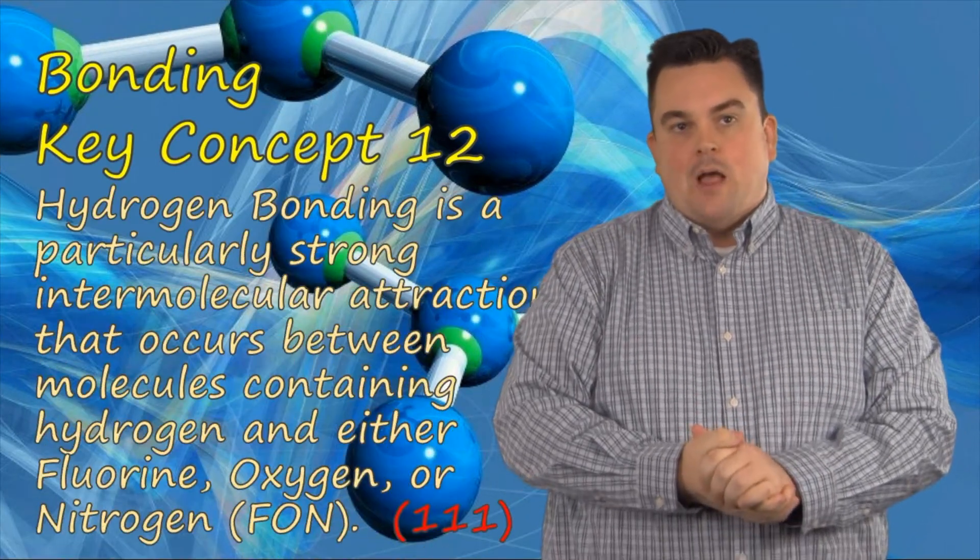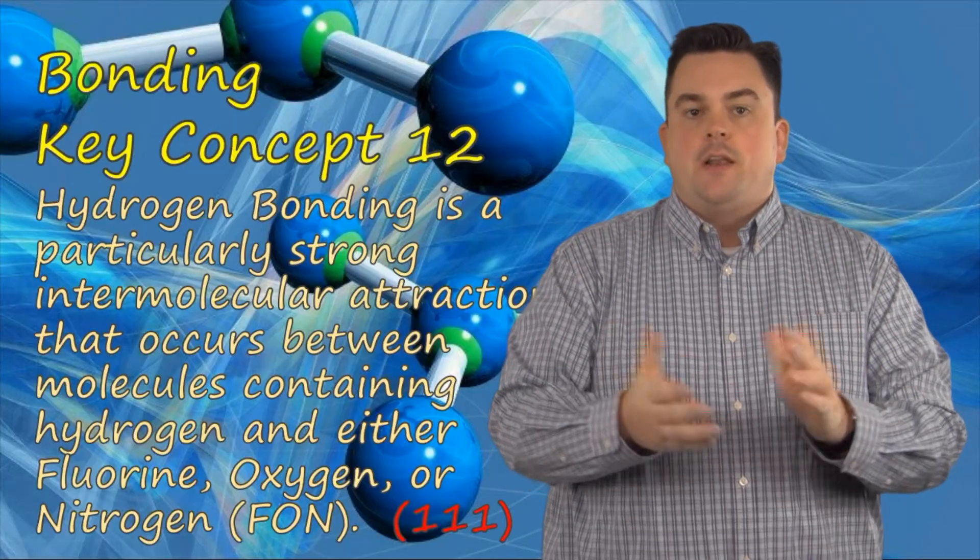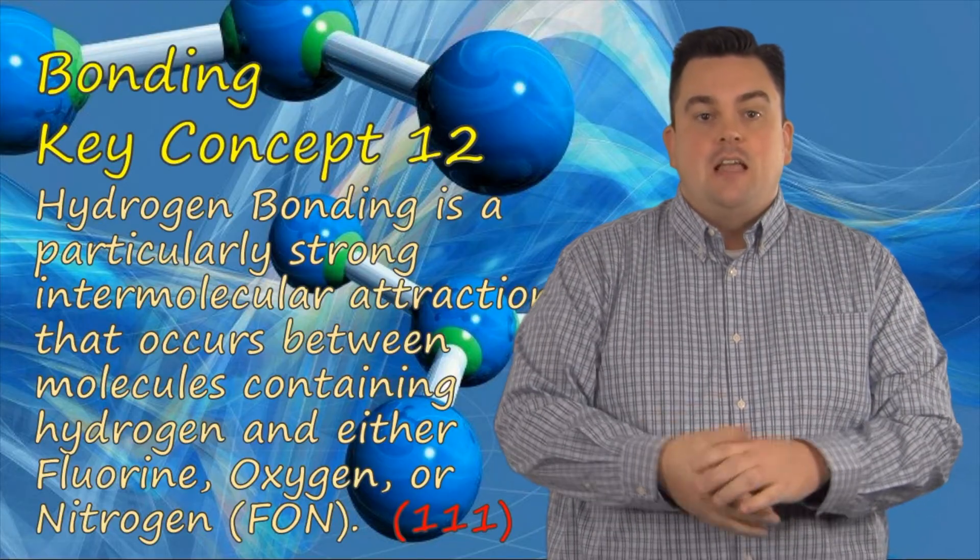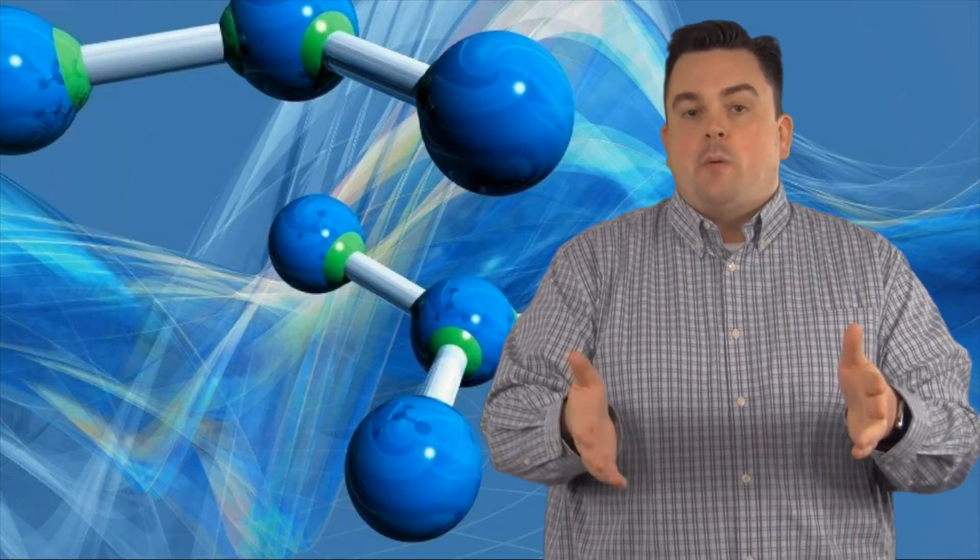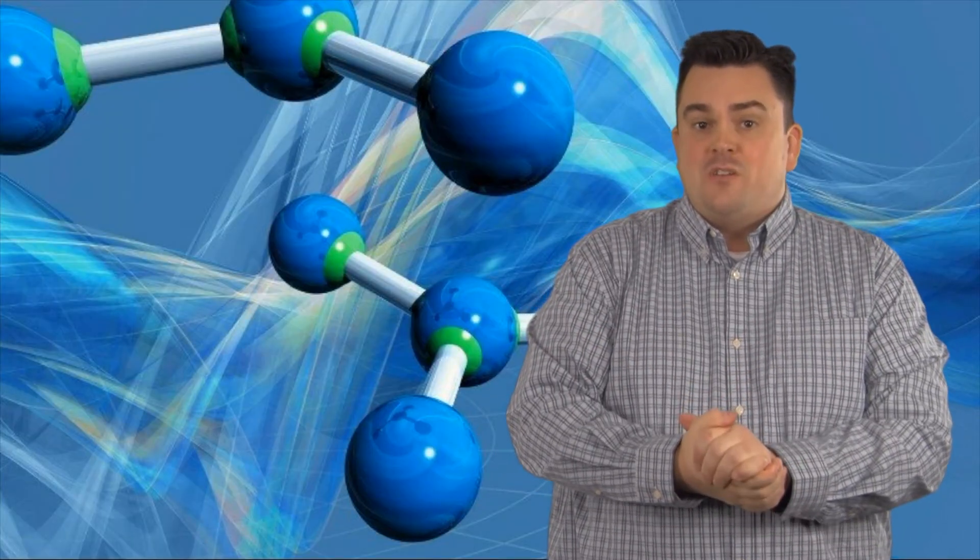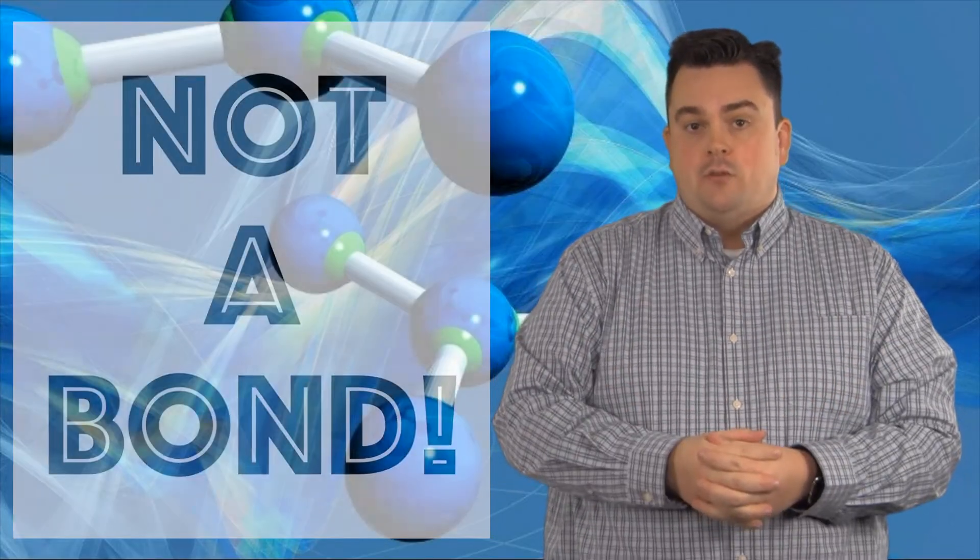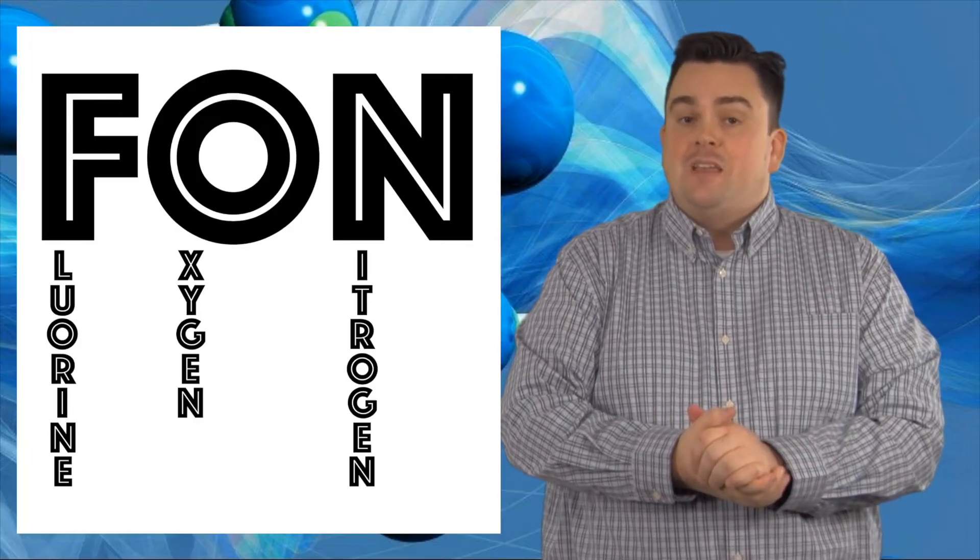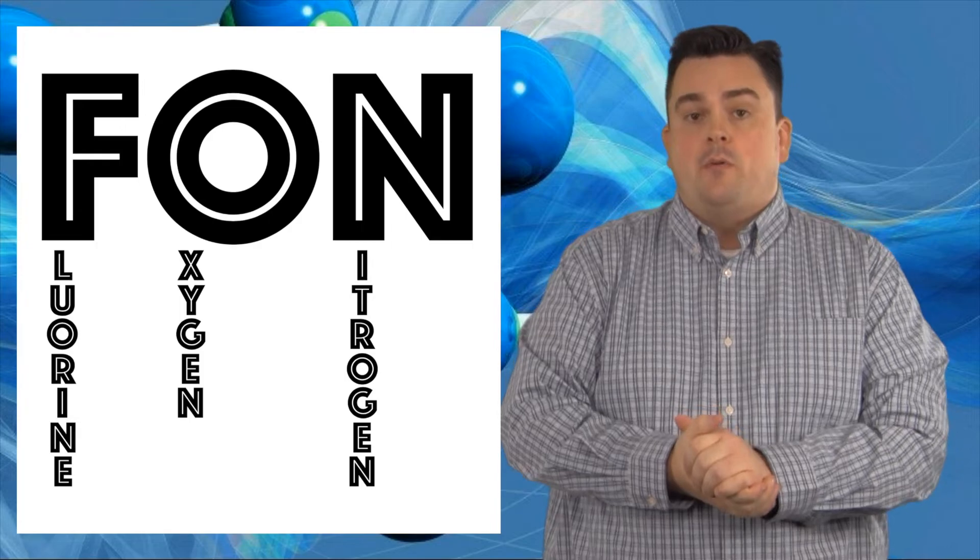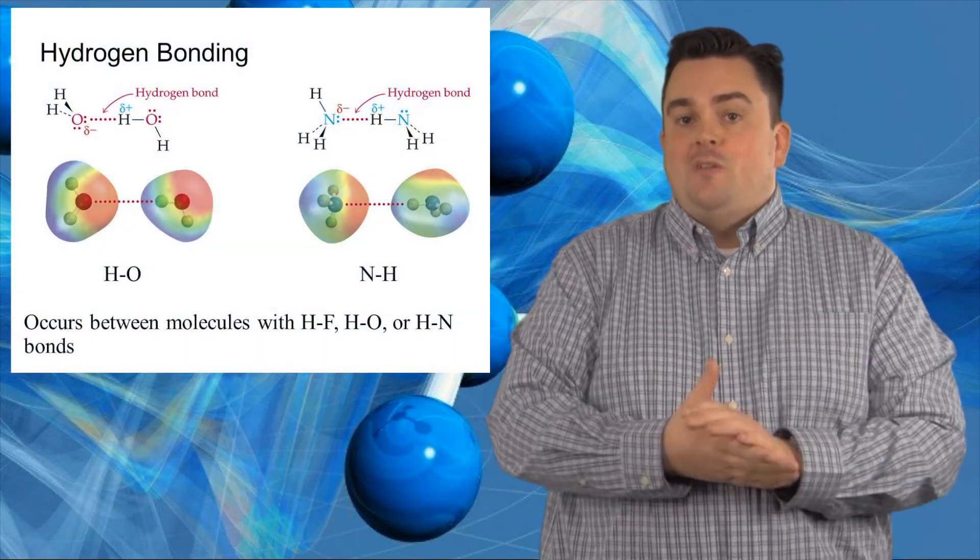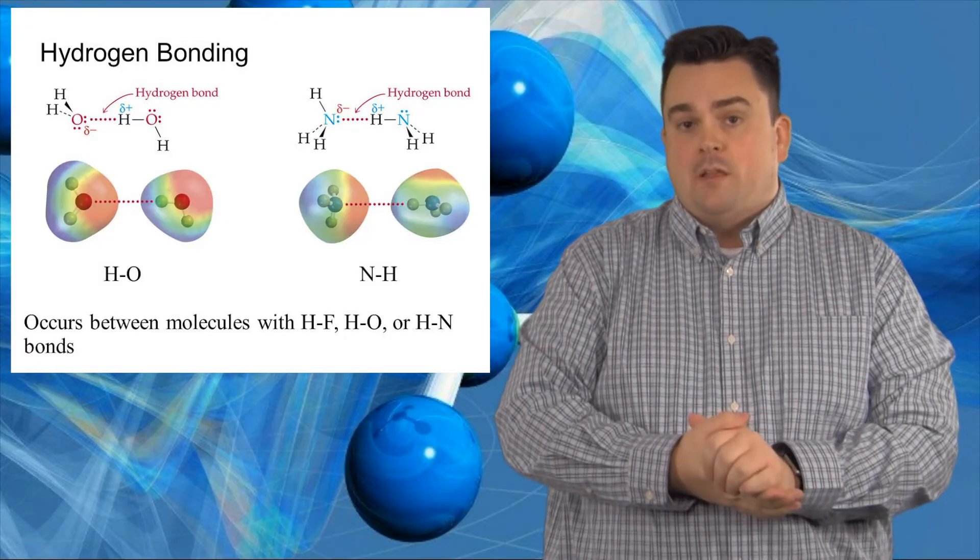Bonding key concept 12. Hydrogen bonding is a particularly strong intermolecular attraction that occurs between molecules containing hydrogen and the elements fluorine, oxygen, or nitrogen. A couple things to remember about hydrogen bonding is that, first of all, it is not a bond. It's an intermolecular attraction between molecules. Hydrogen bonding is also FON, which means it occurs with elements fluorine, oxygen, and nitrogen. It's a great way to remember it. Lastly, molecules that have hydrogen bonding tend to have very high melting and boiling points.